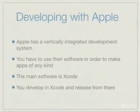Apple has a vertically integrated development system. So what does that mean? You've probably heard of the term vertically integrated before, but in terms of business and not in terms of software development. In business, a vertically integrated company means that the company owns every part of the production — how it gets the resources, how it develops those resources into a product. It owns the research and development — everything is owned by that company.